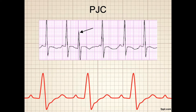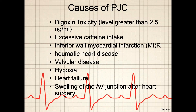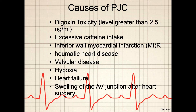This is a positive view of a PJC. Note the lack of a P wave before the early QRS complex. There are many causes of PJCs. One of the most important and dangerous is digoxin toxicity — blood levels of digoxin greater than 2.5 nanograms per milliliter. Other causes include excessive caffeine intake, inferior wall myocardial infarction, rheumatic heart disease, valvular disease, hypoxia, heart failure, and swelling of the AV junction after heart surgery.